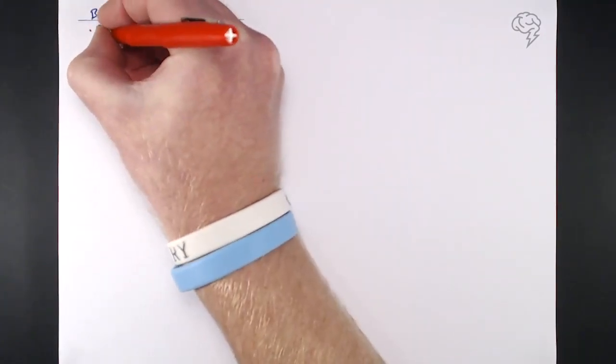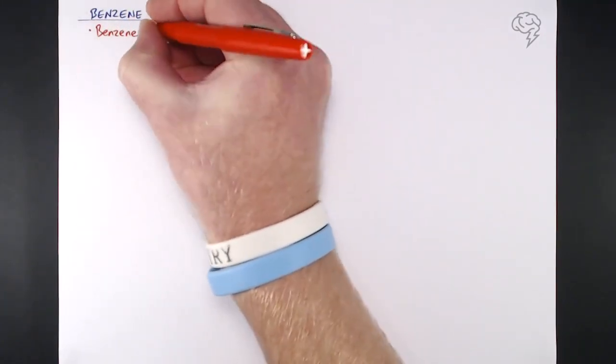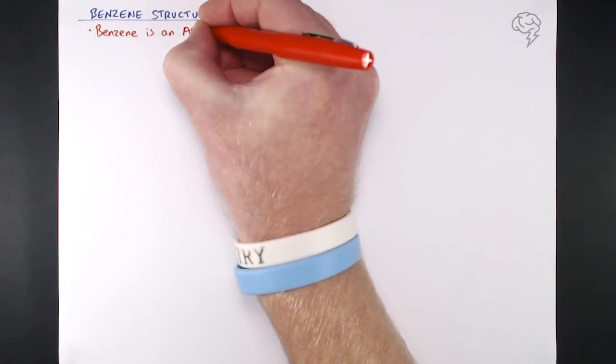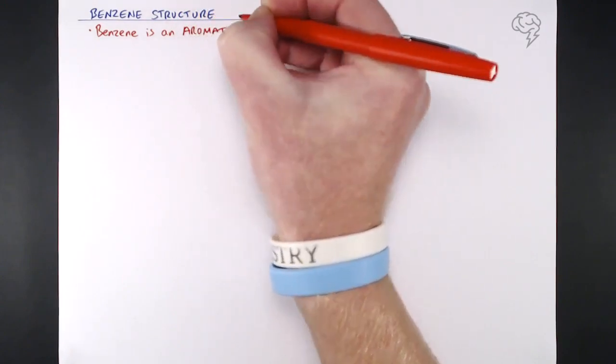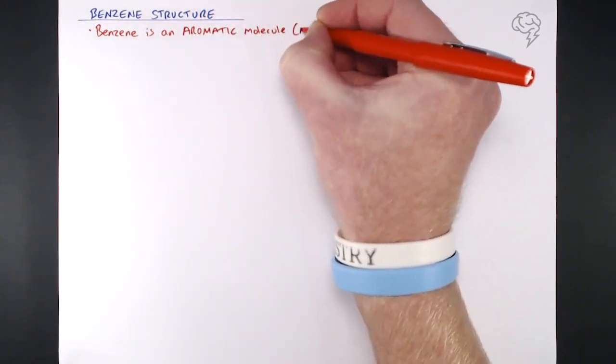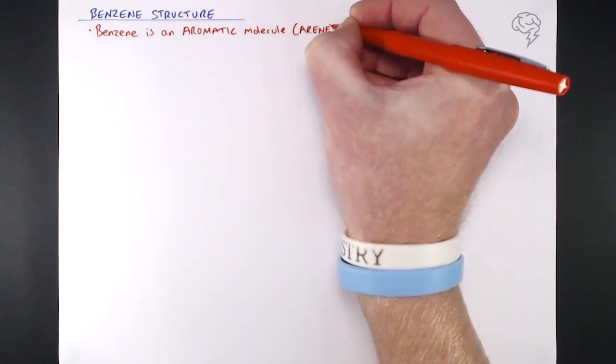First of all, just a little bit of housekeeping with regards to terminology. Benzene is an aromatic molecule. Now I don't mean that it's very smelly, it's just the way that we describe the actual structure of benzene relating to its bonding.